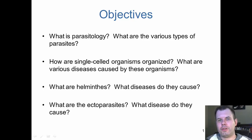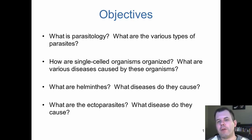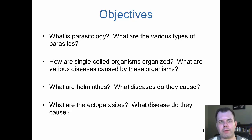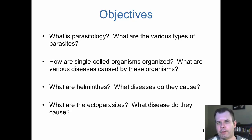Hi class, Dr. Jim here. Chapter 23 is looking at parasites, and we can divide these up into three main groups. First we'll talk about the really small guys, the single-cell organisms known as protozoa, which are typically found in the intestine. You'll find out in this lecture that about 10% of the world's population actually has some kind of parasite within them.